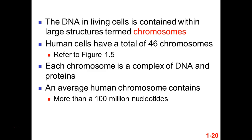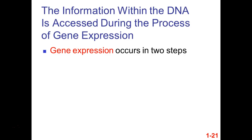Remember, we're at 3 billion nucleotides total, with about 1,000 different genes per chromosome — segments that actually code for a protein. Gene expression happens in two steps — we don't go straight from DNA to protein. DNA is turned into RNA, and that process is called transcription.